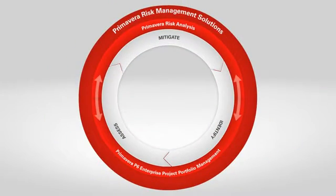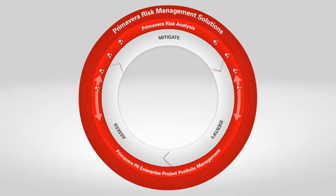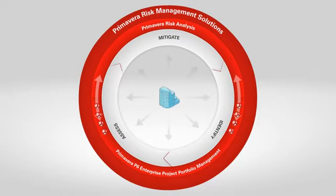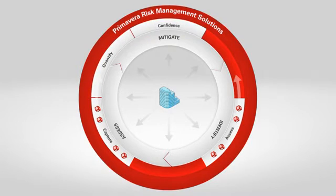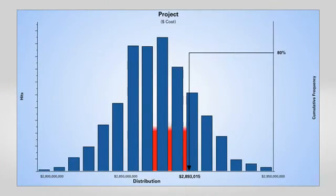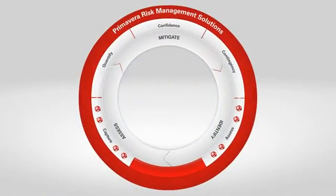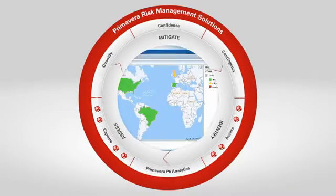The integration with Primavera Risk Analysis allows for a seamless flow of project and risk information between the products. After risk and project data is analyzed, the risk-adjusted schedule information flows back into Primavera P6 Enterprise Project Portfolio Management. This process helps your organization succeed through a consistent iterative process of capturing and assessing risk in P6 ePPM, quantifying the impact of the risk, and determining the confidence level in the project's success while ensuring the right balance of contingency is allocated. Finally, risk is evaluated across the project portfolio using Primavera P6 Analytics.